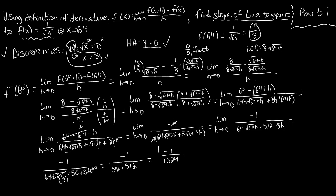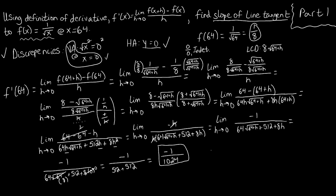We did all this limit evaluation, but let's not lose sight of what we accomplished. We evaluated the derivative of our original function at x equals 64. This gives us the instantaneous rate of change — the slope of the line tangent to f of x equals 1 over root x at x equals 64. So we've taken care of Part 1.